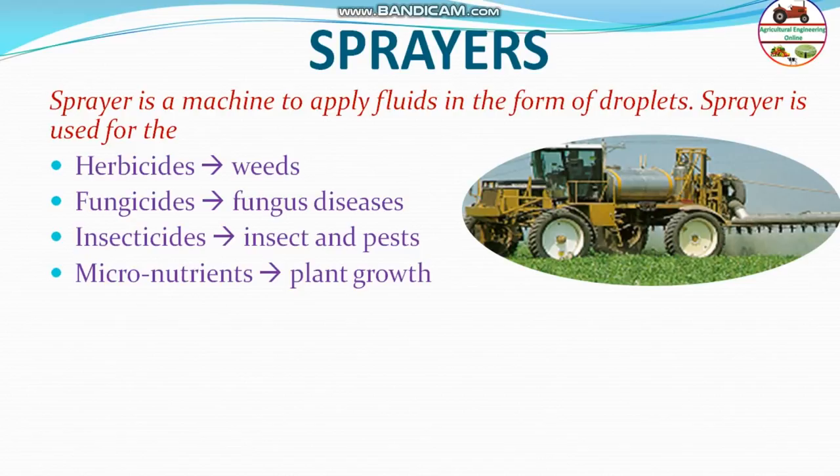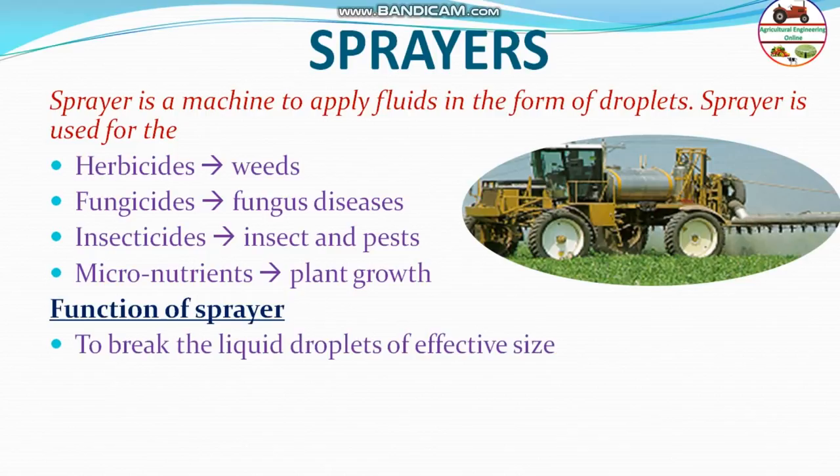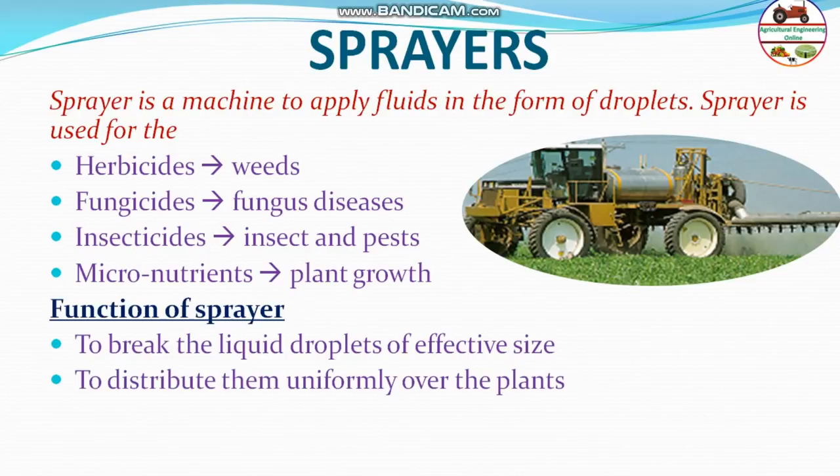Next is the function of the sprayer. First, to break the liquid into droplets of required size, because we cannot apply a very large amount of liquid in the field — small amounts of liquid have to be broken into small droplets of required size. The next function is to distribute them uniformly over the plants, moving in such a way that droplets are spread evenly.